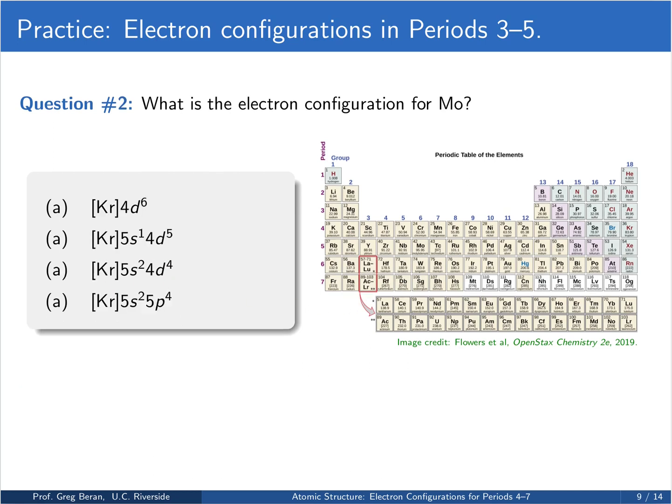Let's try another one. Now, what's the electron configuration for molybdenum, element 42 and group 6? Again, pause the video and hit resume when you're ready for the solution.